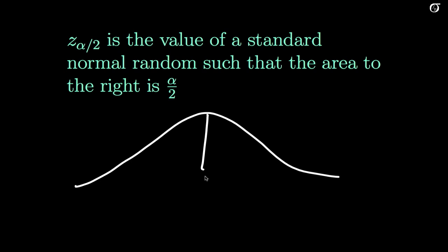So if we drew a picture like this, 0 in the middle for a standard normal random variable, and we want this middle area here to be our 1 minus alpha, that's what we're getting at. That middle area is going to be the 1 minus alpha for our confidence interval.